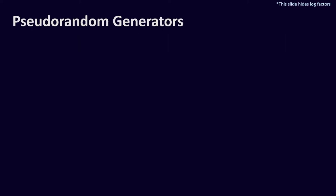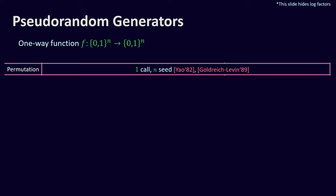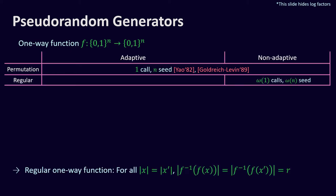Let's start by presenting the parameters of the best known constructions of PRGs. The efficiency of a pseudorandom generator construction from a one-way function can depend on the exact assumption we have on the structure of the function. For example, if we assume the function is a permutation, we can use the Goldreich-Levin hardcore predicate to construct a PRG using one call and linear seed length. If we only assume the function is regular, meaning every image has the same number of preimages, we can construct a PRG using omega of one calls and omega of n seed length.